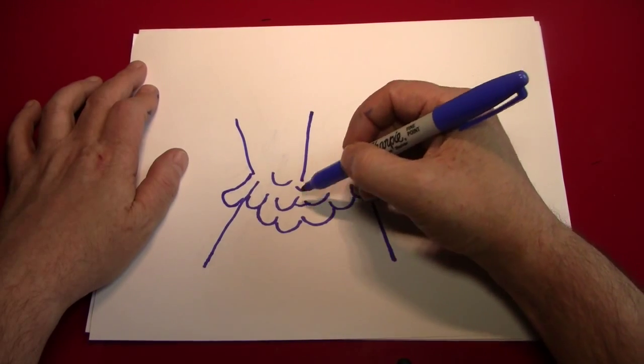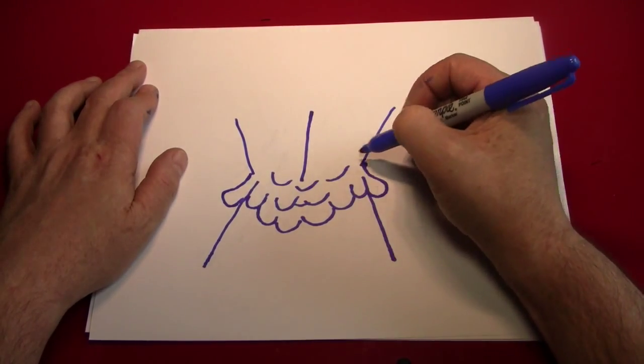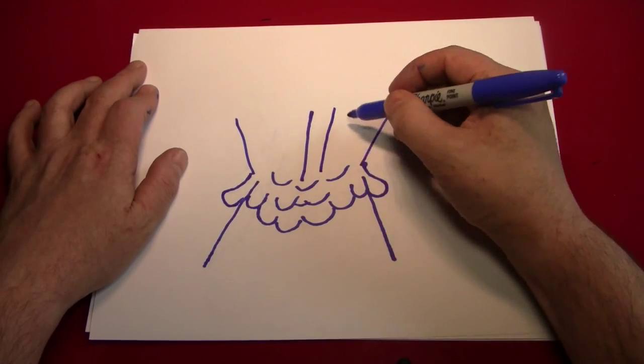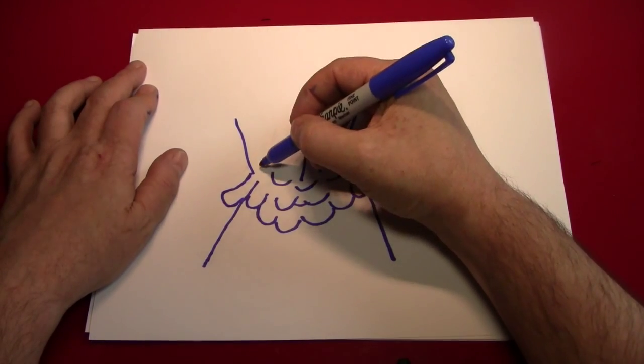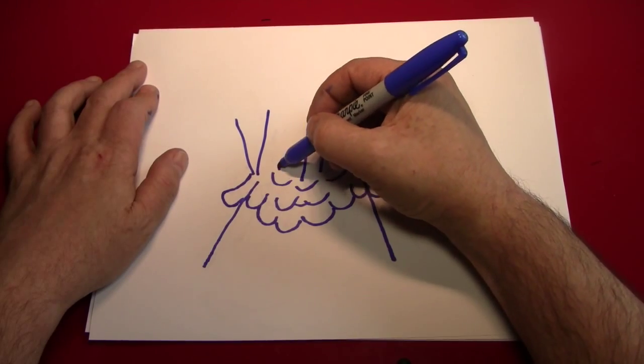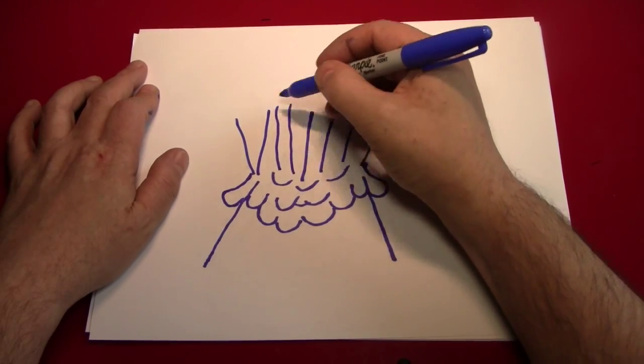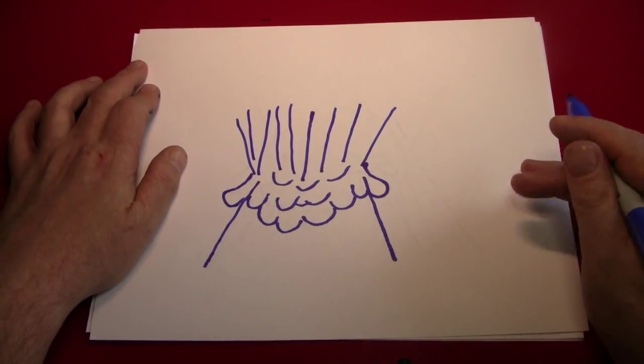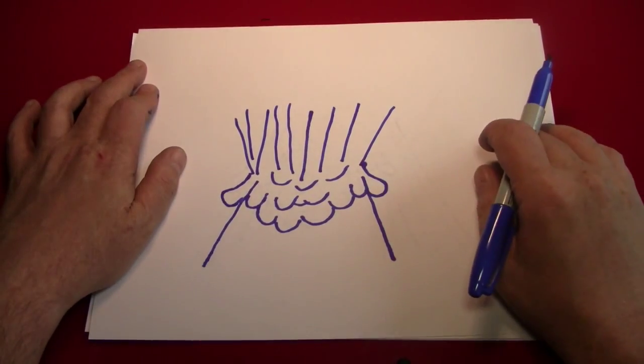And the lines in the middle should start a little bit lower than the lines on the edge to help show that the volcano has a round lip.